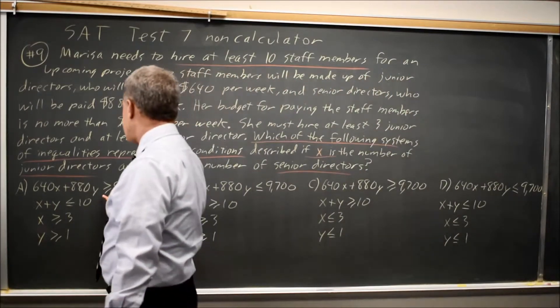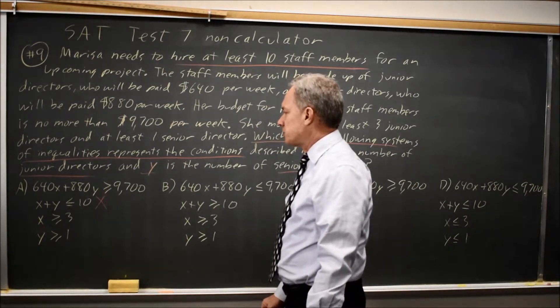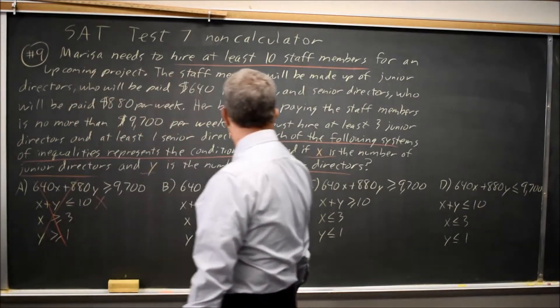This choice is X plus Y less than or equal to 10. That would be no more than 10 staff members. Since that's wrong, choice A can be rejected.